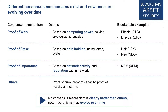A more modern alternative is proof of stake. Instead of computing power, the coin holdings of individual nodes are used as the decisive factor. The more coins you hold — the more of a whale you are in the network — the more say you have, and the larger your chances of being chosen to propose the next block. Think of it as a lottery where you get more tickets the more coins you have. Popular examples include LISC and NEO, though NEO's exact classification can be debated.